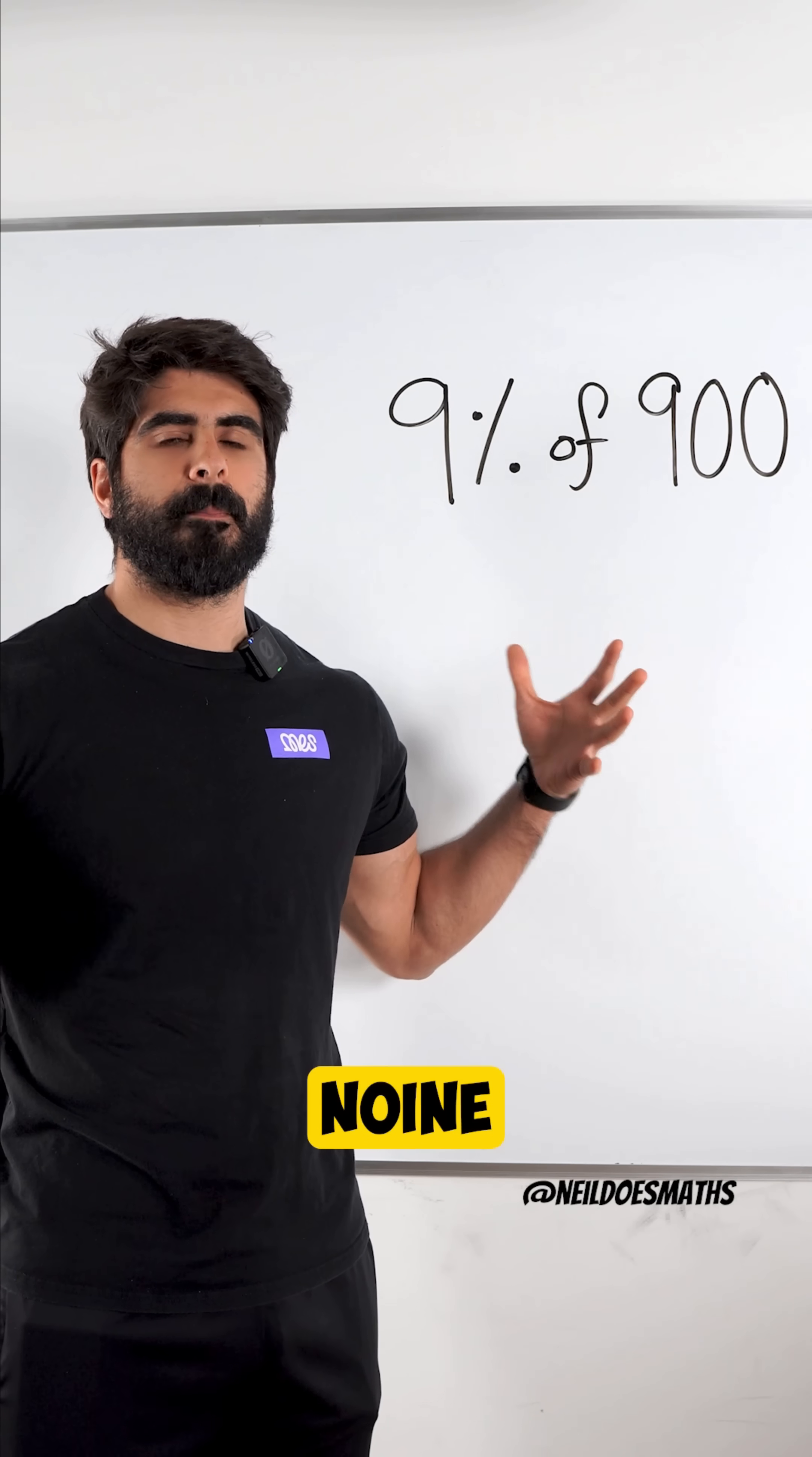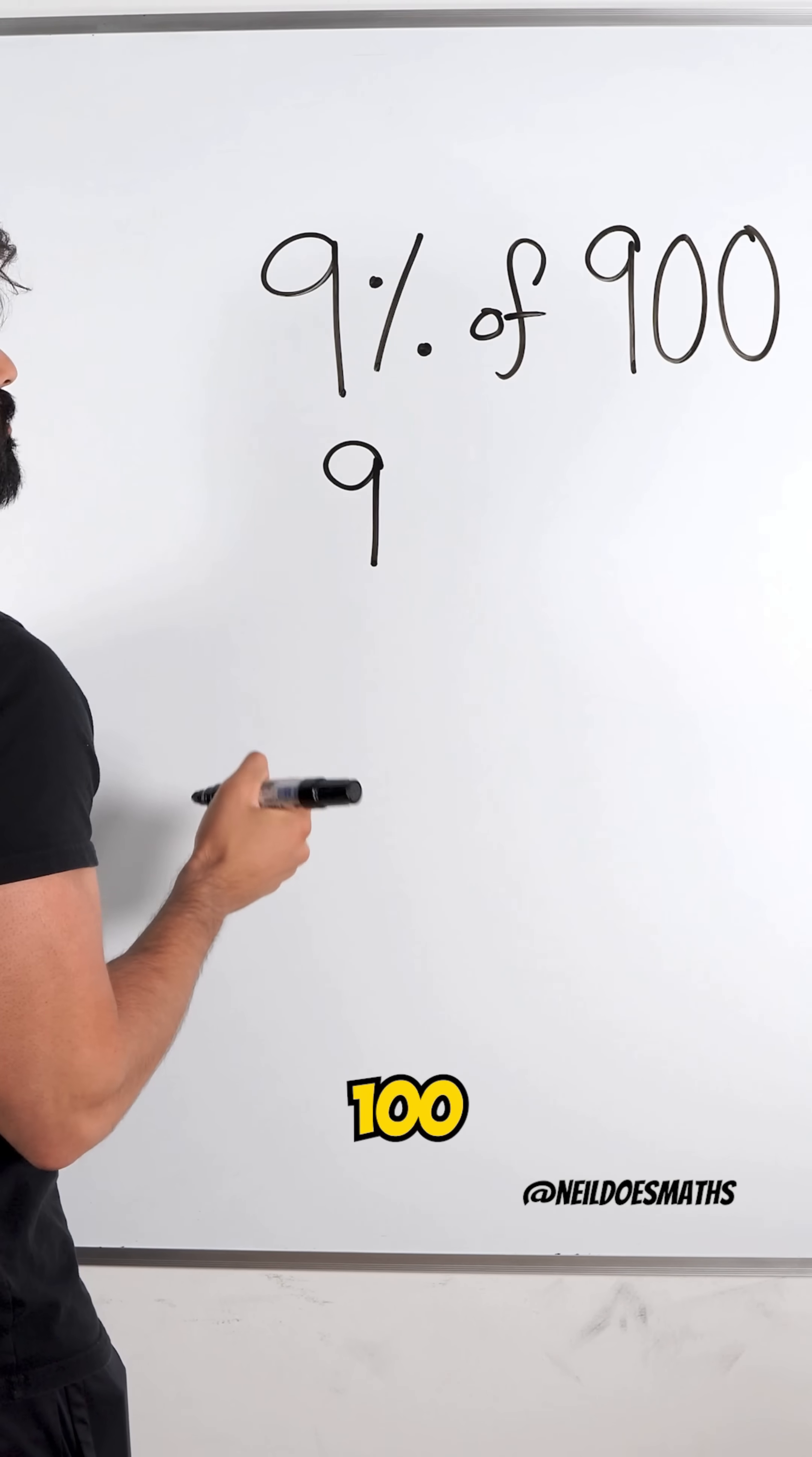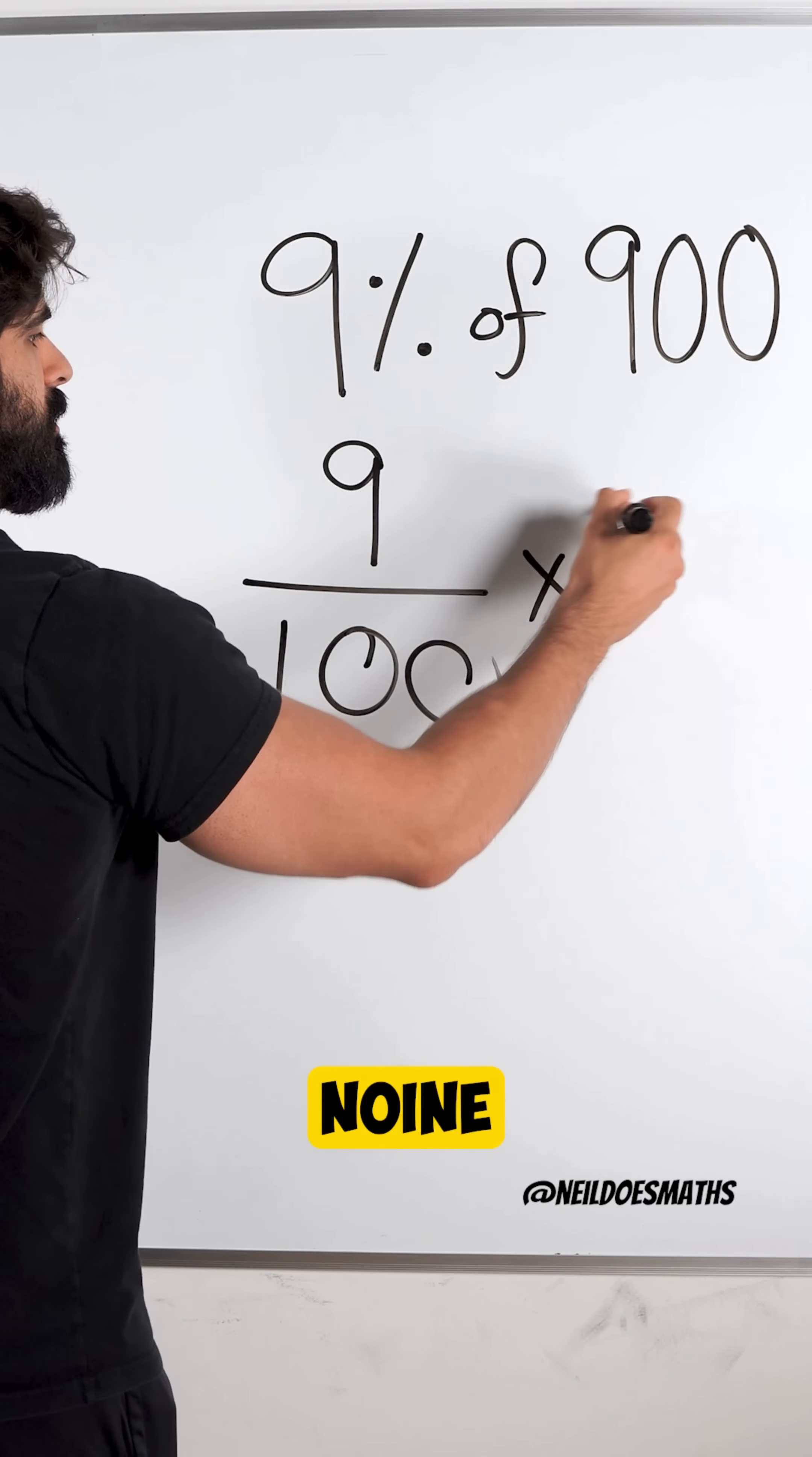So if I want to calculate nine percent of nine hundred, let's take a look. Percent means per one hundred. It's saying nine per one hundred, of means multiplication, nine hundred.